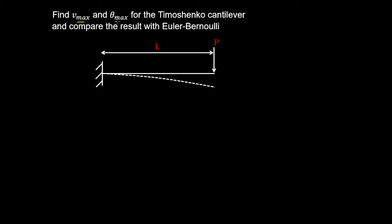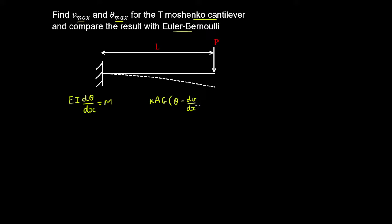Let's find the maximum deflection and rotation of a Timoshenko cantilever and compare the result with Euler-Bernoulli. The governing equations are: bending stiffness times curvature equals bending moment; and the shear correction factor times area times shear modulus, multiplied by the negative of the shear angle — which is the bending angle minus the net rotation of the neutral axis — equals the shear force.